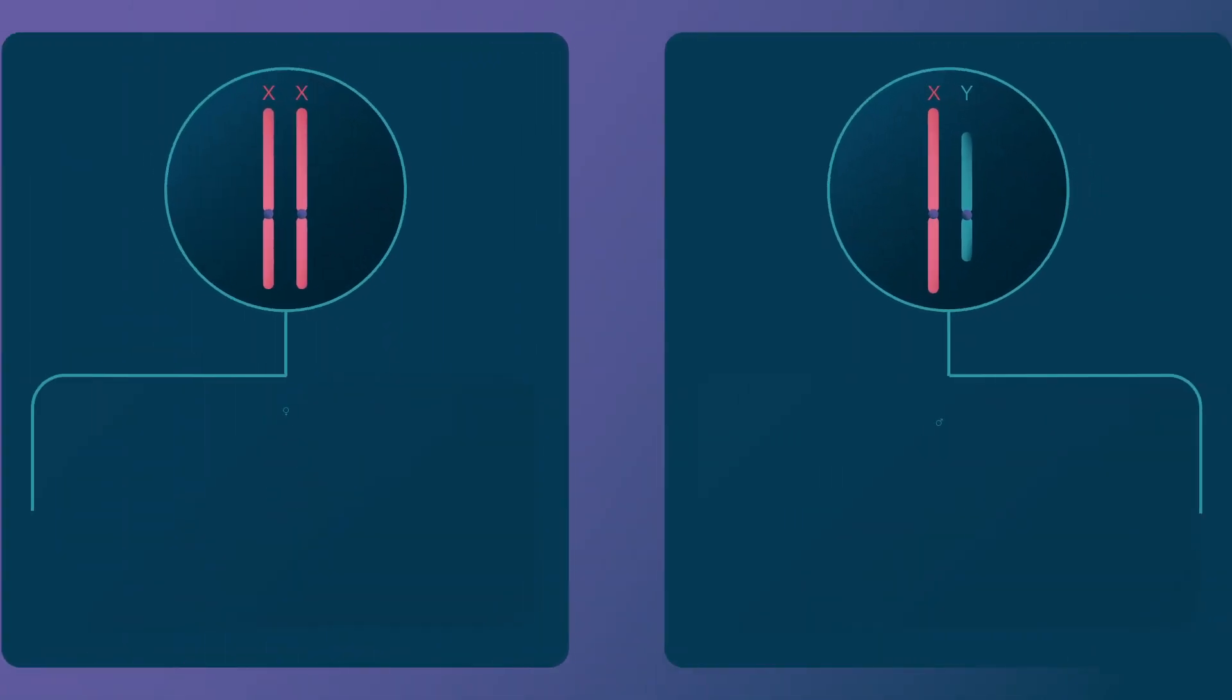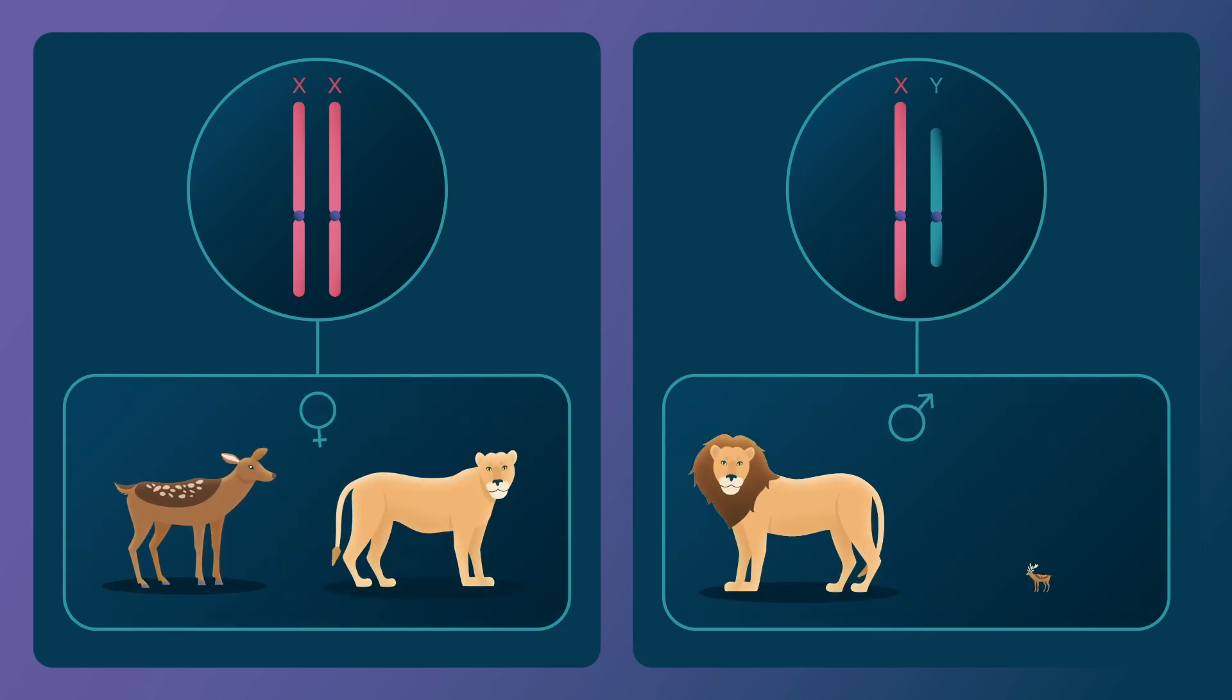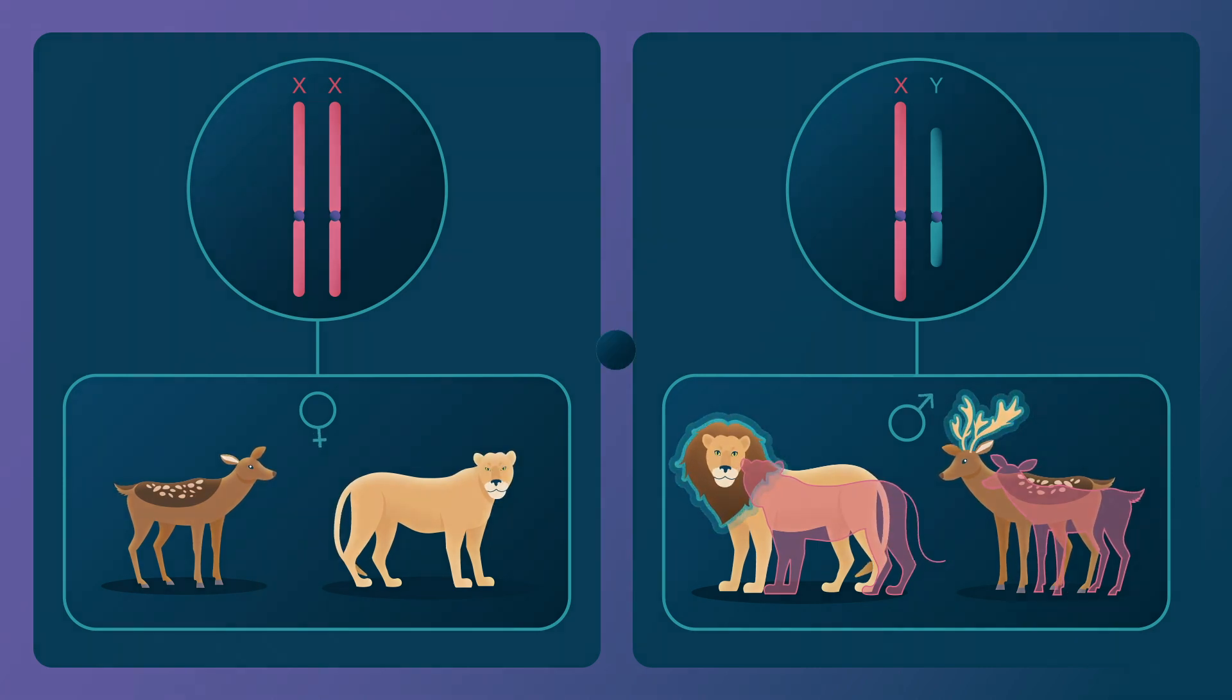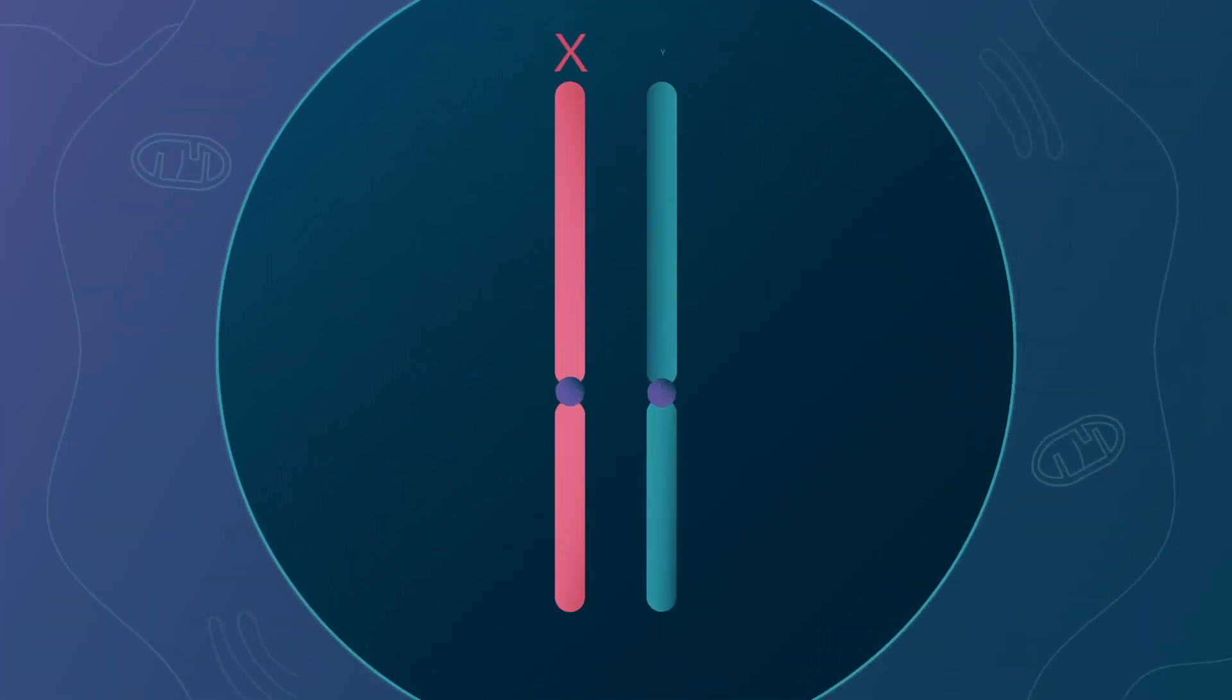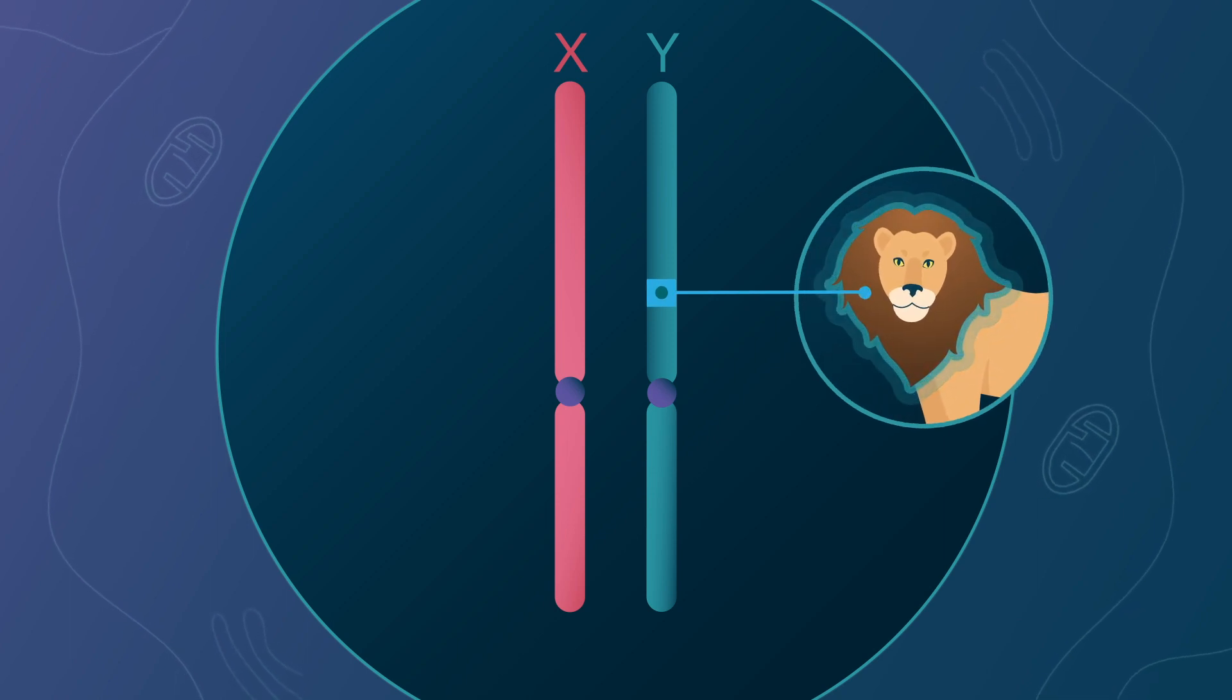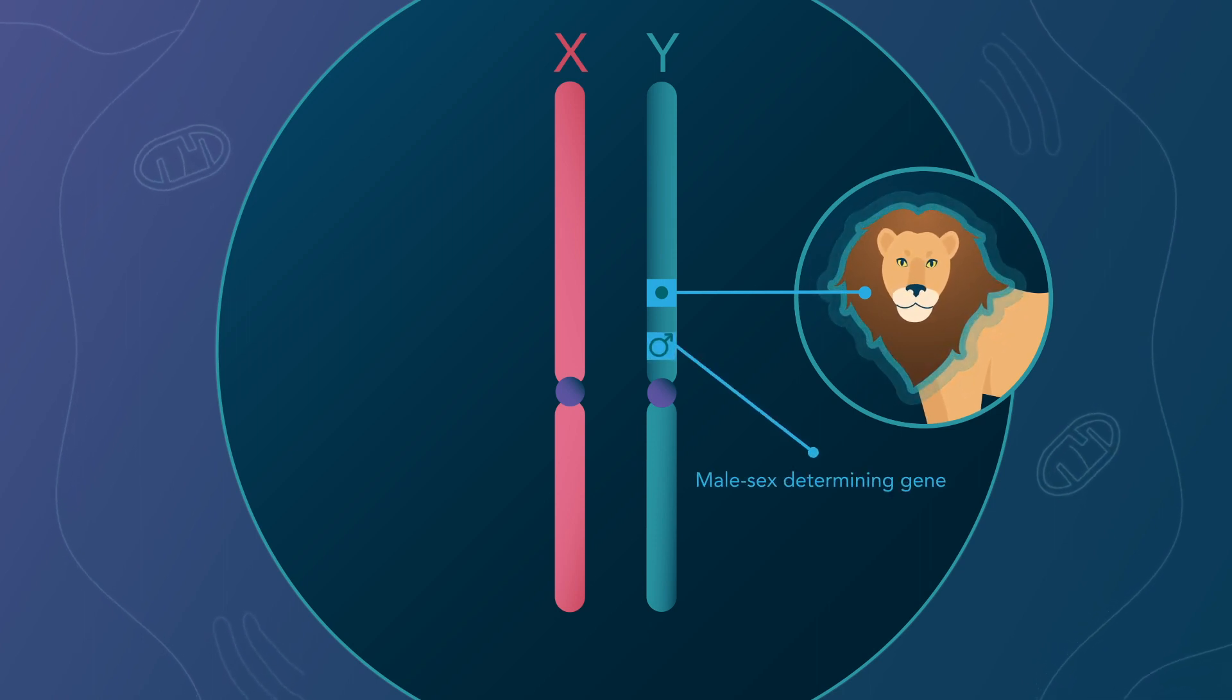It has long been thought that this was due to differences between males and females. There are indeed many traits which differ between males and females, such as a lion's mane, a deer's antlers, or males often being larger. Scientists have therefore formulated the hypothesis that genes with versions beneficial only in males could be selected for being linked to the gene determining the male sex on the Y chromosome.